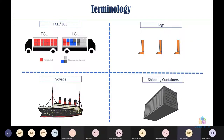Key terminologies: LCL (Less than Container Load) means multiple shippers share a container — you don't have enough volume to fill a full container. FCL (Full Container Load) means the entire container is your shipment. In the FCL diagram, the red represents your shipment while blue and gray represent other importers' shipments in the LCL scenario.